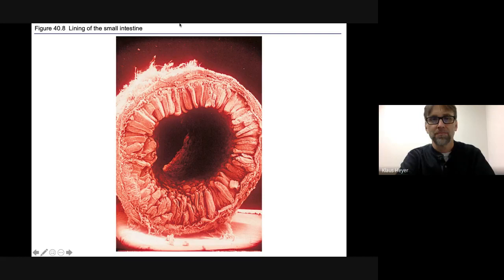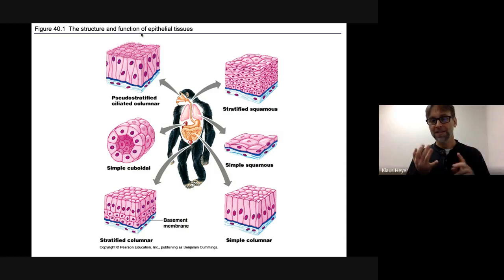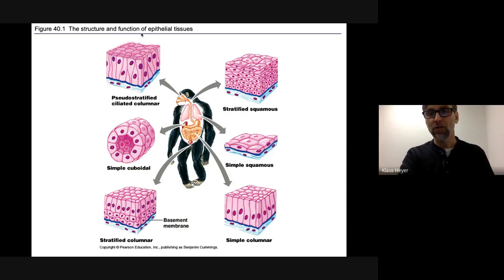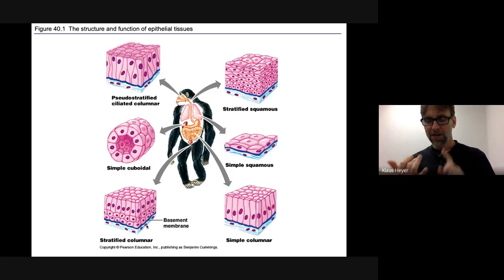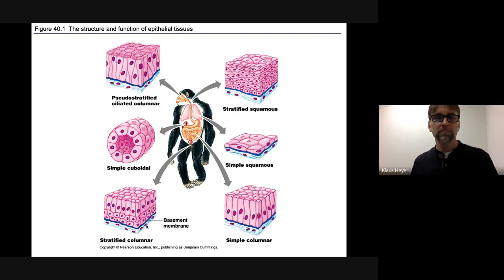Epithelial tissue: densely packed cells, lines organs and covers surfaces. Most of the time — but not always — it's attached to something called a basement membrane. So there are three things to keep in mind: number one, densely packed cells; number two, lines organs and covers surfaces; number three, attached to a basement membrane.